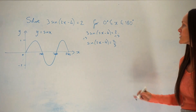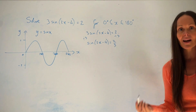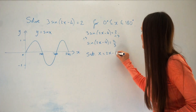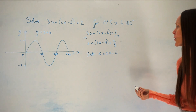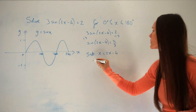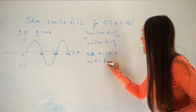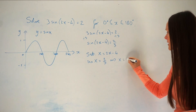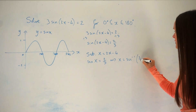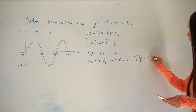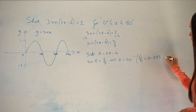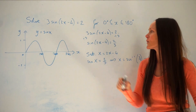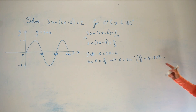Next, we're going to make a substitution — replacing everything inside the bracket with capital X. By doing that substitution, we make the equation into something much simpler: sinX = 2/3. To work out capital X, type into your calculator sin⁻¹ of 2/3, and you get 41.8103... Remember, this is capital X, and we're trying to work out little x — we haven't quite finished yet.